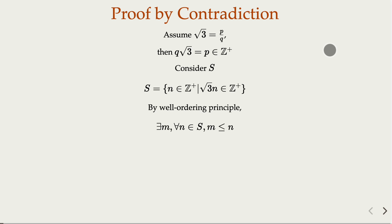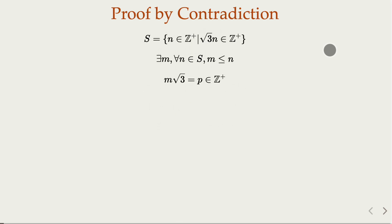The well-ordering principle states there exists a least element m in S. So m is such that square root of 3 times m is also an integer — we call that integer p.